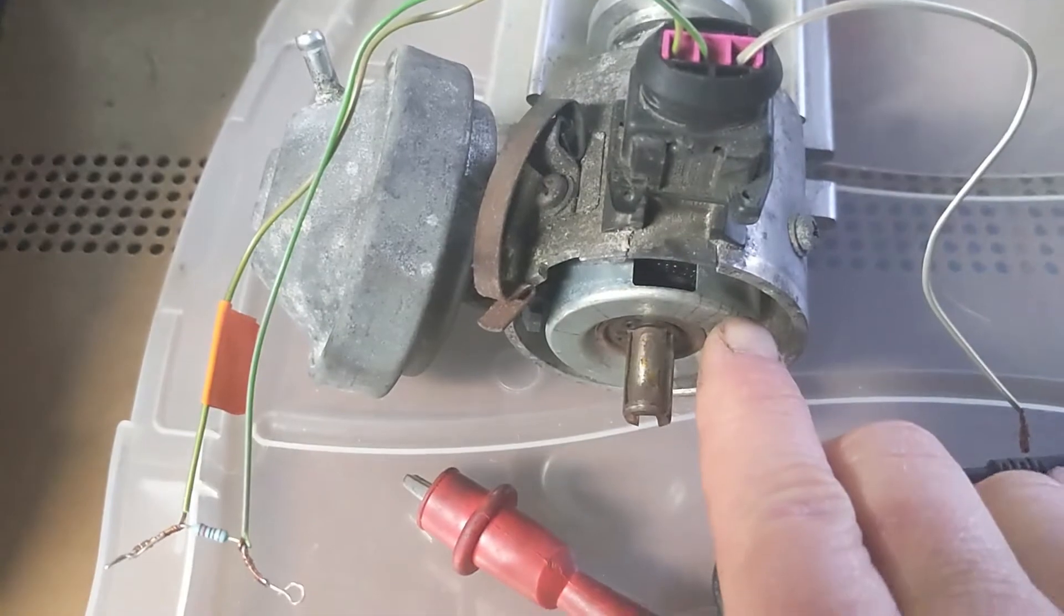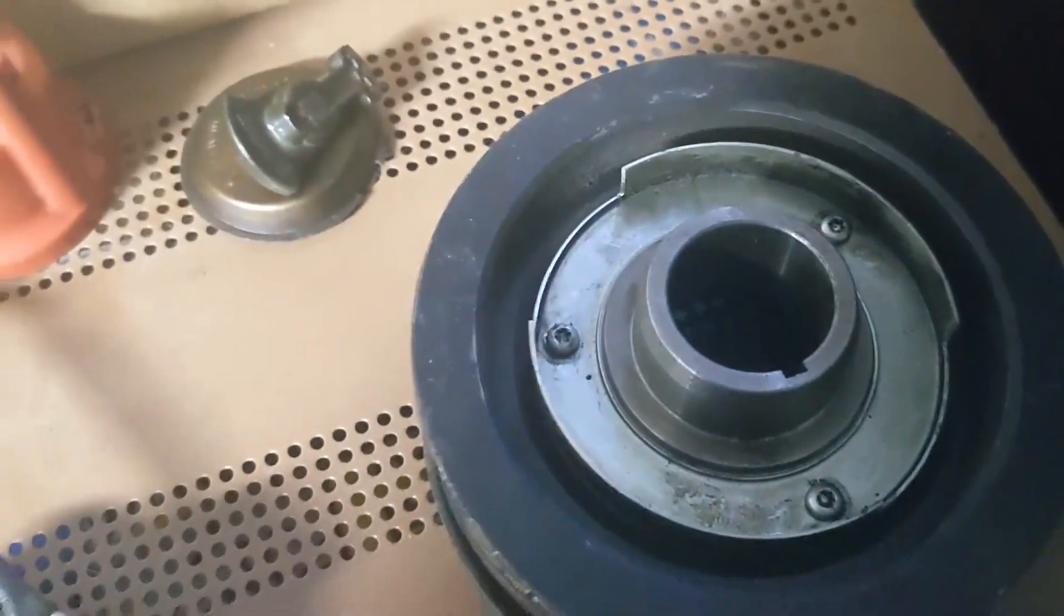So that guy is the aperture disc. And on the non-turbo, the aperture disc is bolted to the back of the crank pulley.